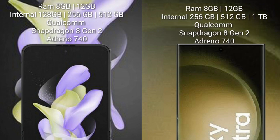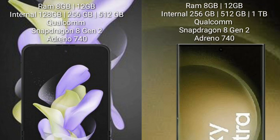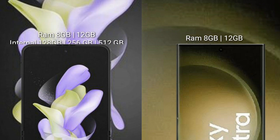The Samsung Galaxy S23 Ultra comes with 8GB or 12GB RAM and 256GB, 512GB, or 1TB internal storage. It is also powered by a Qualcomm Snapdragon 8 Gen 2 processor with the Adreno 740 GPU.